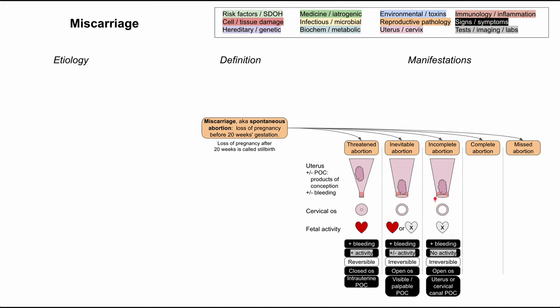Complete abortion is what happens once the products of conception have been expelled. The products of conception are now extra-uterine — we don't see them on the diagram at all. There is still some residual vaginal bleeding coming from the uterus. The os has now closed once it expelled the products of conception. This is irreversible; the fetus has perished and there's just a little residual bleeding.